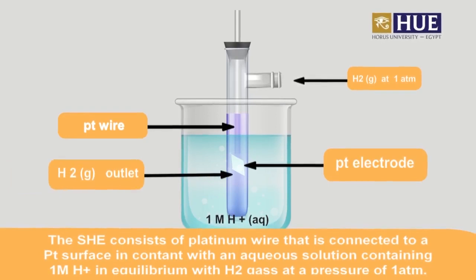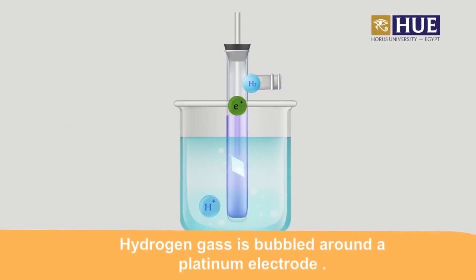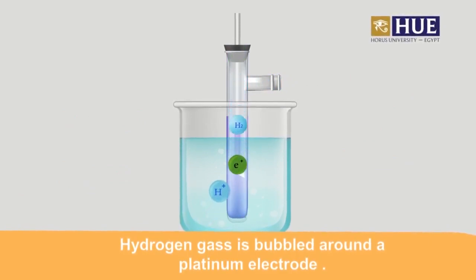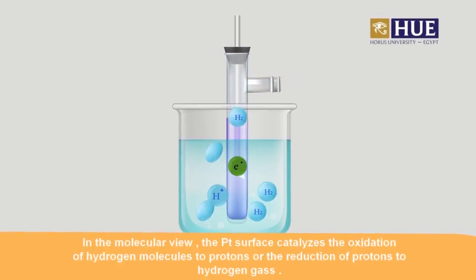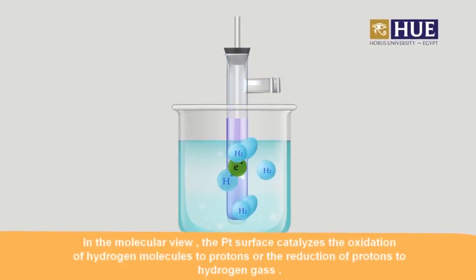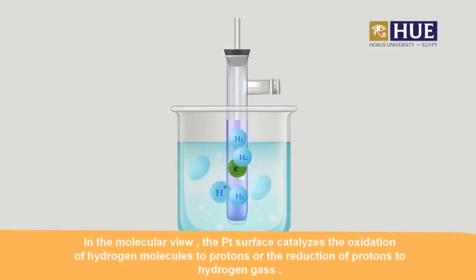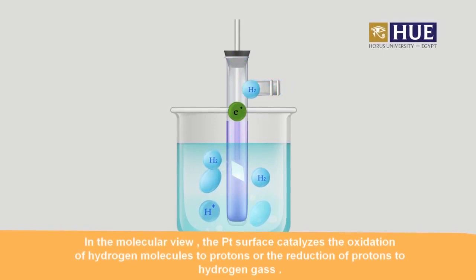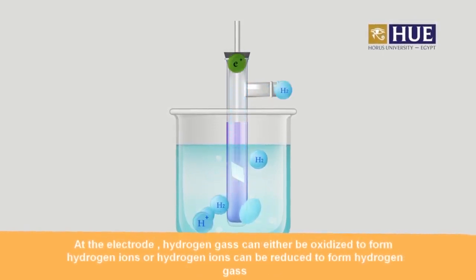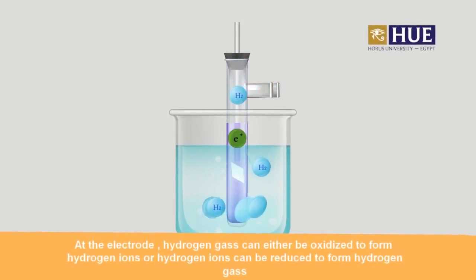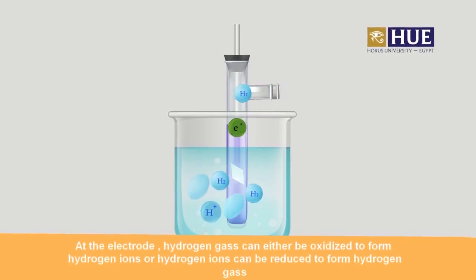Hydrogen gas is bubbled around a platinum electrode. In the molecular view, the platinum surface catalyzes oxidation of hydrogen molecules to protons, or the reduction of protons to hydrogen gas. At the electrode, hydrogen gas can either be oxidized to form hydrogen ions, or hydrogen ions can be reduced to form hydrogen gas.